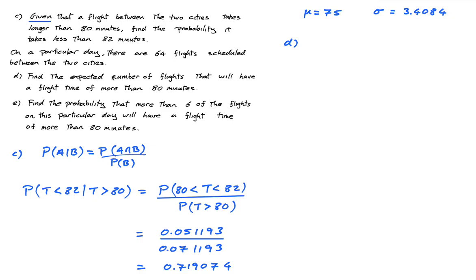So I know the probability that T is more than 80 is 0.071193. That's from part b. That's like saying 7.12 percent of flights are longer than 80 minutes.